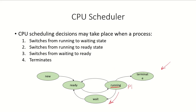Another scenario is that a process in the running state goes back to the ready state. This could happen in case of an interrupt — an interrupt is received and the process moves from running to ready. The CPU is again available and can be assigned to some other process.